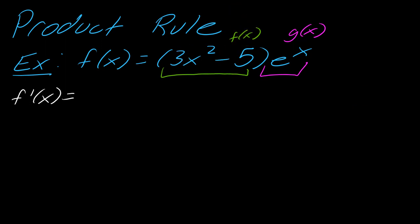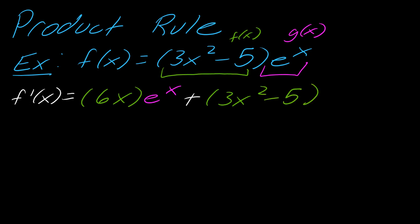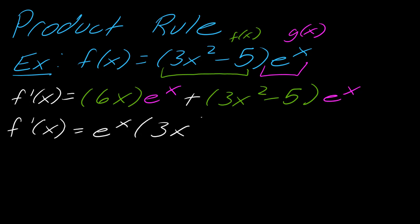First I take the derivative of f(x), which is 6x, and leave e^x alone. Then I add to this: I leave the first part — 3x² − 5x — alone and multiply by the derivative of e^x, which is just e^x. You can simplify by factoring out e^x to get e^x(3x² + 6x − 5). It's worth understanding how a book simplifies these, since algebra becomes very important as you progress in calculus.